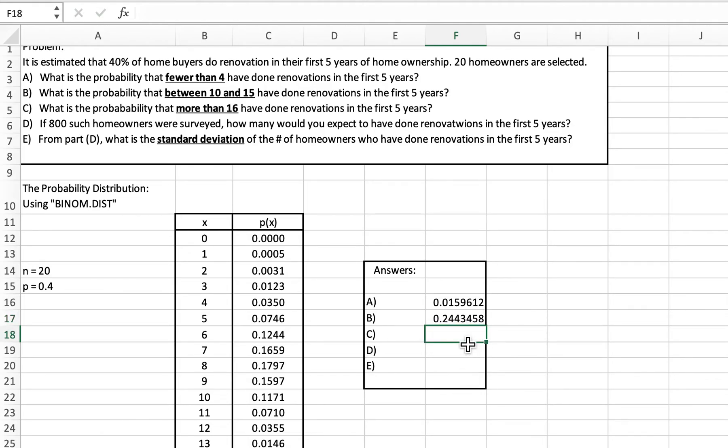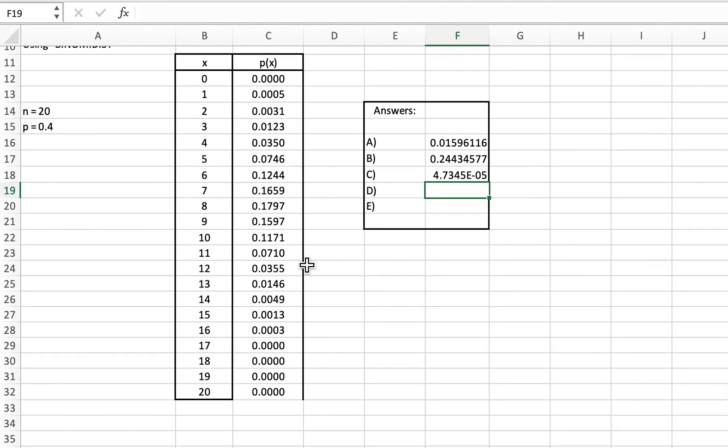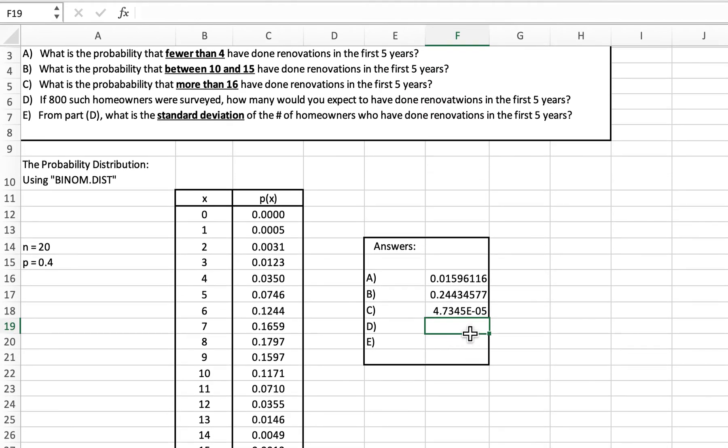In the last one, we want more than 16, which means we want 17 and up. We're looking at that same function again. We have 20, 0.4, 17, and 20. There's our probability. Notice that is small, which does make sense based on our distribution, because if you add up 17 through 20, we're basically adding up zeros if we have four decimal places.